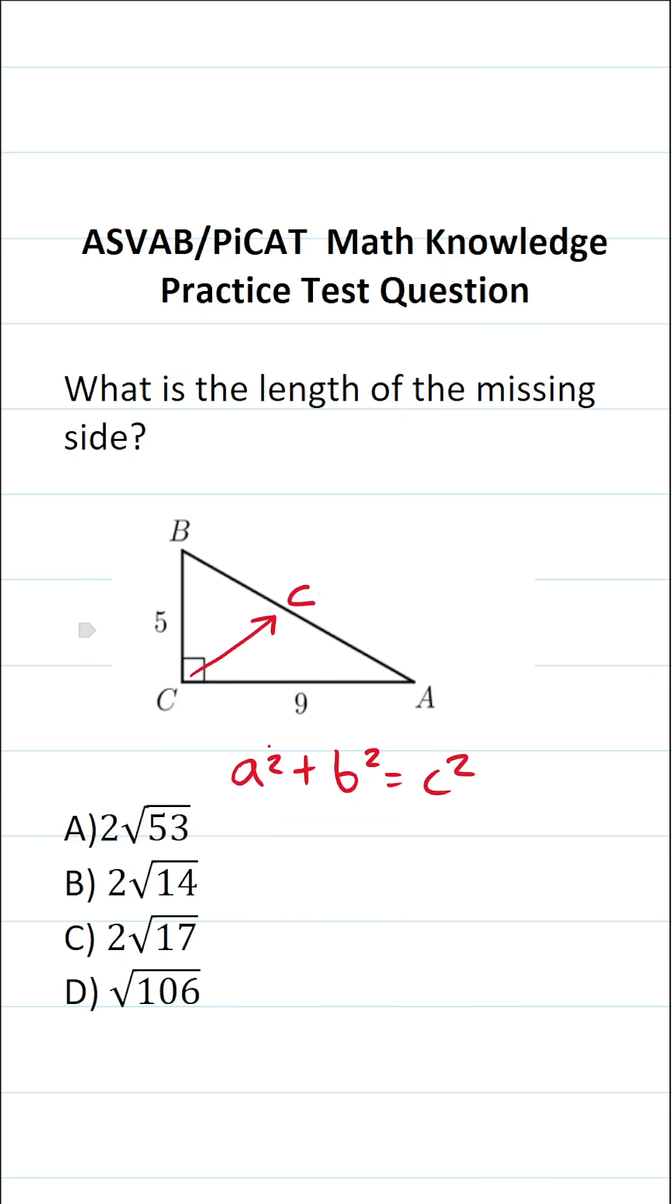So I know this is gonna be c, and I can let a be five and b be nine. Of course, on the actual ASVAB and PiCAT, you won't have a reference sheet or a calculator. So in addition to knowing these basic formulas, you also have to be able to perform these calculations by hand.